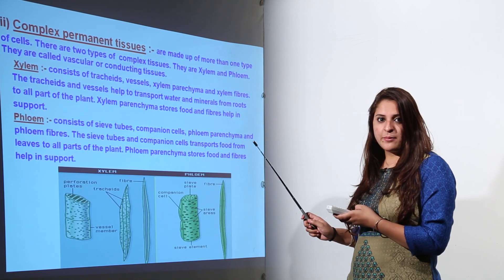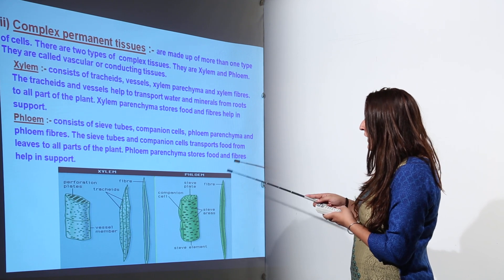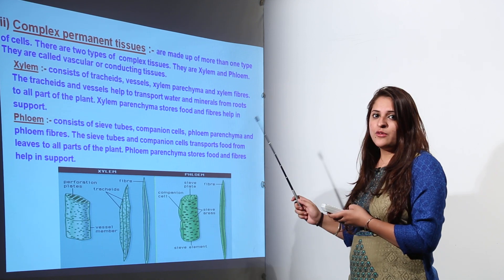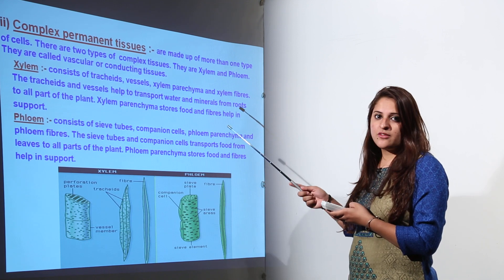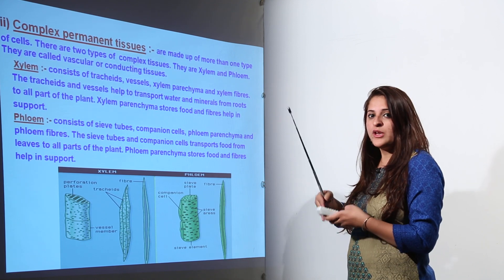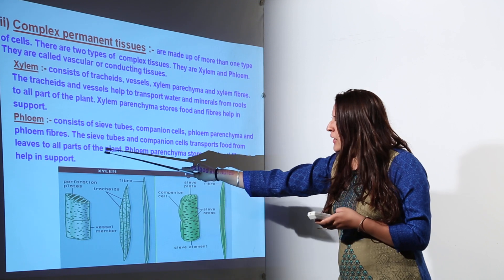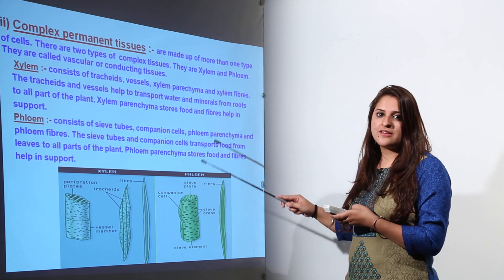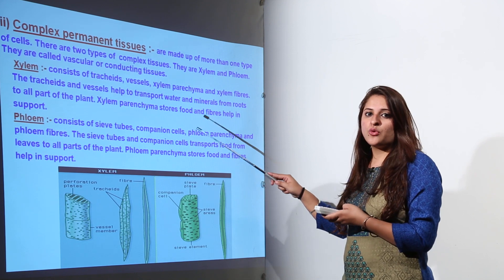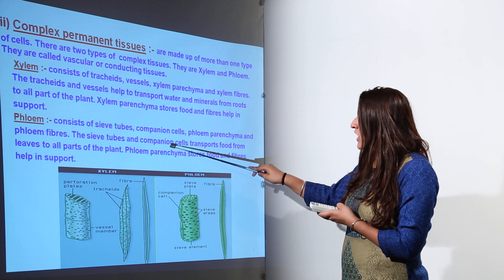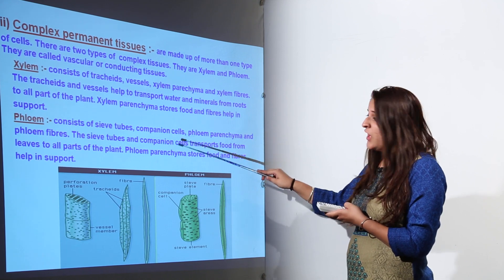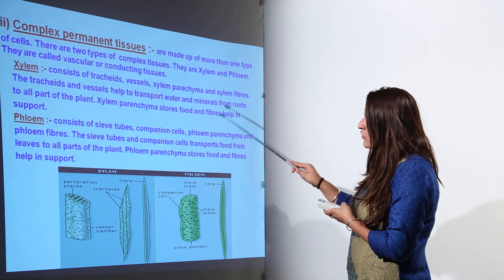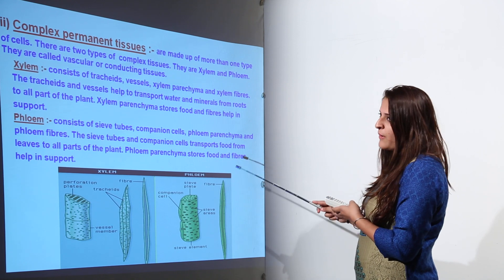Complex permanent tissue is of two types: xylem and phloem. Xylem consists of tracheids, vessels, xylem parenchyma, and xylem fibers. Xylem is involved in the upward movement of water from the roots to the leaves. Phloem is the opposite — it is involved in the downward movement of food synthesized by the leaves during photosynthesis, transporting it to all parts of the plant including roots. Phloem also provides upward movement to the new growing tips of the plant.